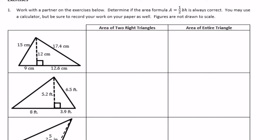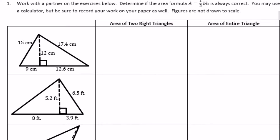We're going to find the area of two right triangles. I can see right triangle A here and another right triangle B right here — they both have right angles. I'll mark B in blue. So we have right triangle A and B. Let's start with A.